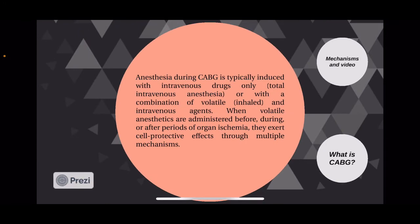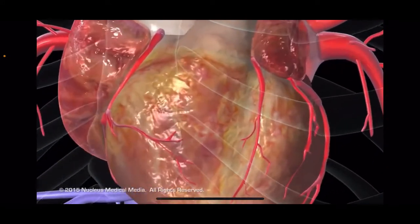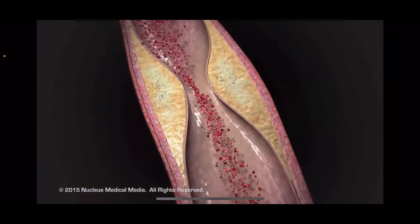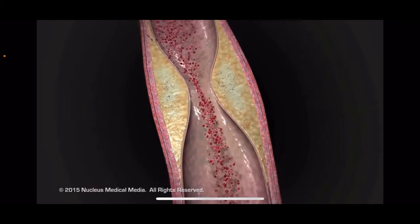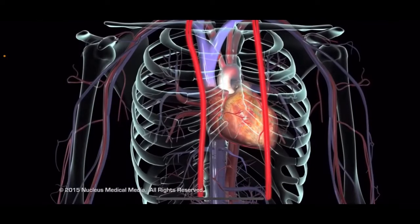What is CABG? Coronary artery bypass grafting is a type of surgery that improves blood flow to the heart. CABG or angioplasty with stent placement may be options if you have severe blockages in your large coronary arteries, especially if your heart's pumping action has already been weakened. Coronary artery disease is a manifestation of a systemic disease — atherosclerosis, arteriosclerosis — involving accumulation of cholesterol plaque between the inner and middle layers of the artery, gradually occluding it. It is like a landslide across a river — you can tunnel through it or go around it and create a new riverbed, and that is what coronary bypass surgery does.